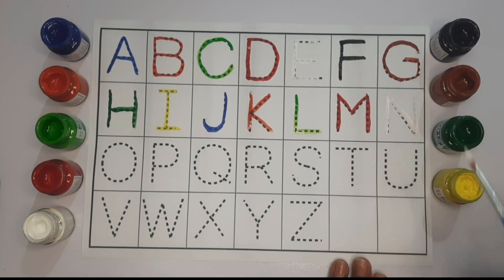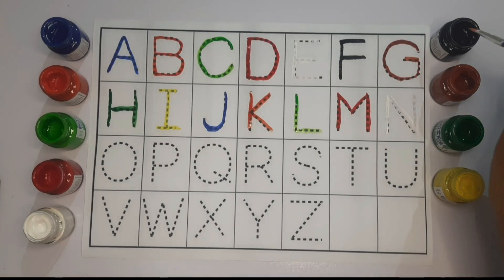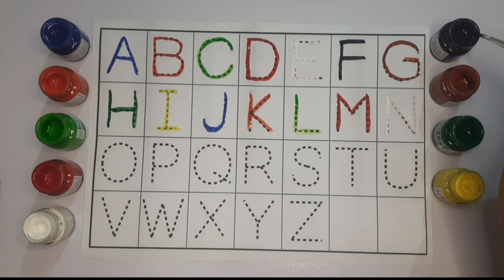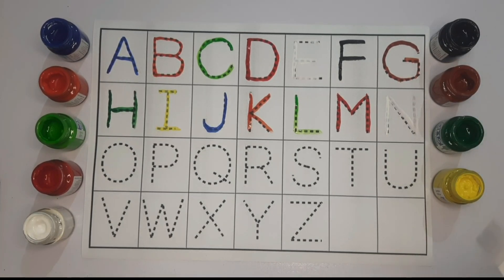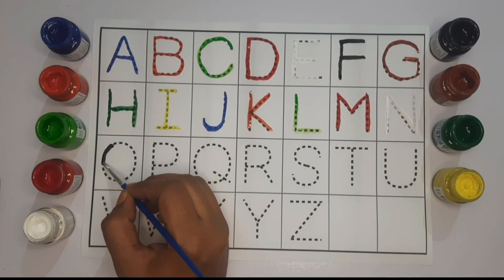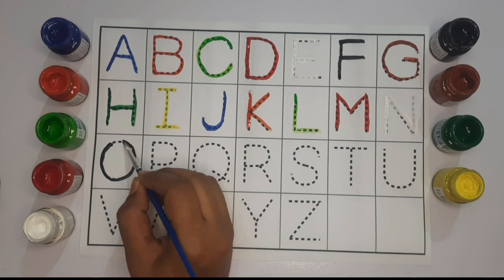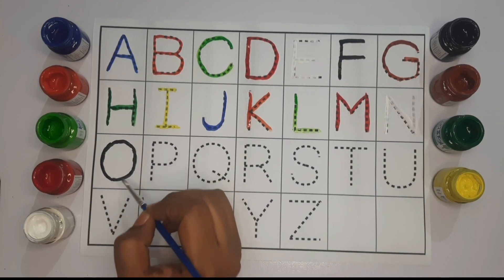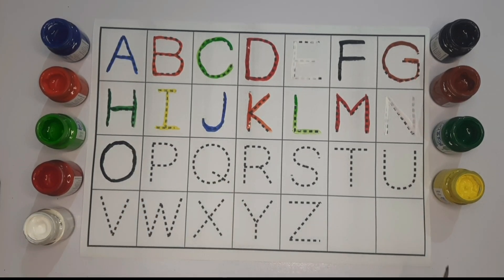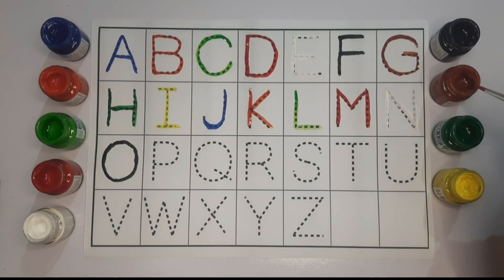This is N. Now we will use black color to write O. This is O. Now we will use brown color to write P.